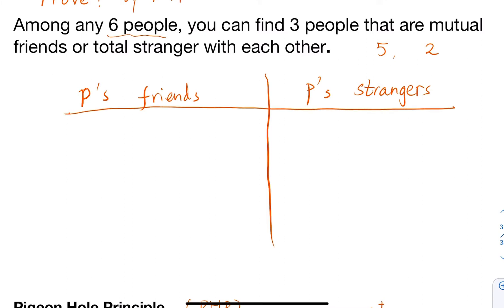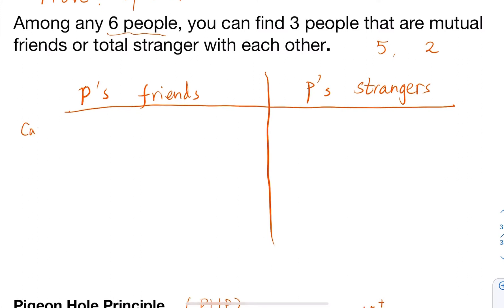Case one: I have at least three people here, let's call them A, B, C - they are friends with P. Or case two, you may have three people who are strangers with P. Let's also call them A, B, C.